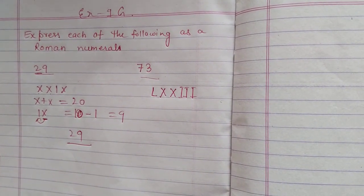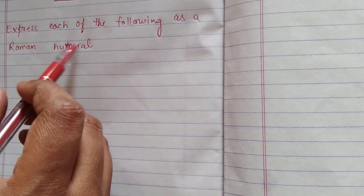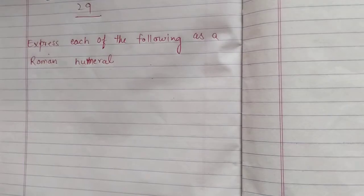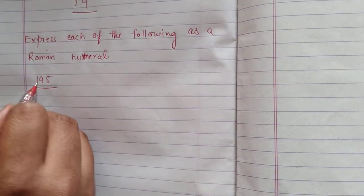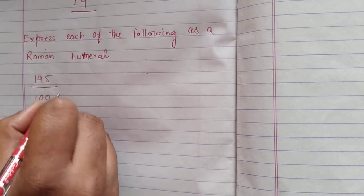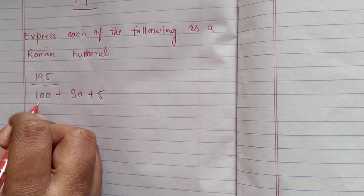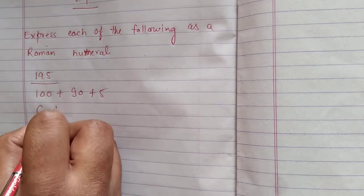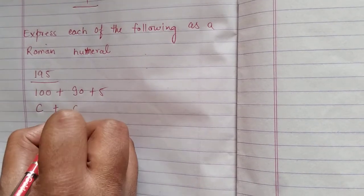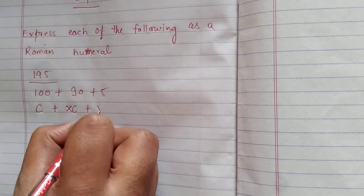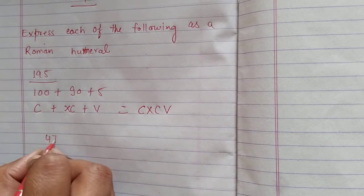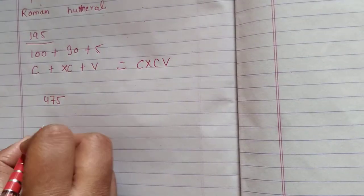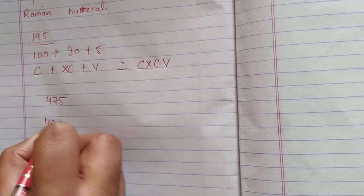Now come to the next question. The second question asks us to express each of the following as Roman Numerals. For 995: break it as 100 plus 90 plus 5. For 100 we use C. For 90 we use XC (100 minus 10). For 5 we use V. So 995 becomes XCVC — that is CMXCV. Is that clear? Similarly for 775.